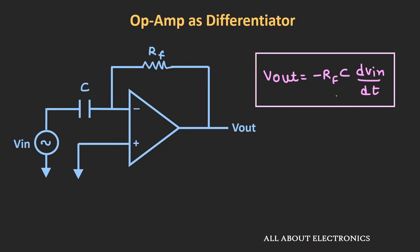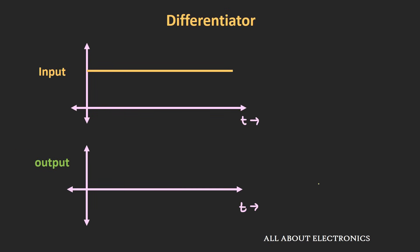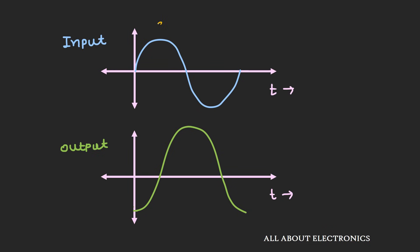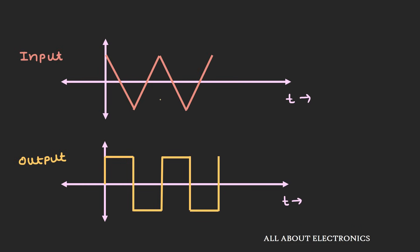So in this circuit, the output voltage will be the differentiation of the input signal, multiplied by the factor −RF×C. For a DC signal, the output will be zero. For a square wave, you get spikes at the transition points. If you apply a sinusoidal signal sin(ωt), the output will be −cos(ωt). If you apply a triangular wave, the output will be a square wave pulse. The amplitude of the output depends on the values of RF and C.